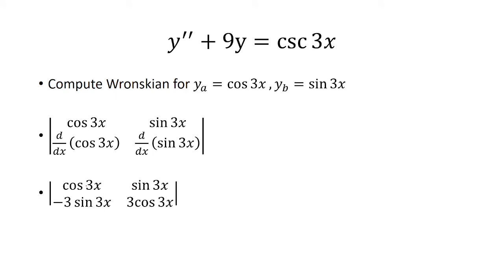So the derivative of cosine 3x is negative 3 sine 3x, and the derivative of sine 3x is 3 cosine 3x. So now we take the determinant, which we have is 3 cosine² 3x, plus 3 sine² 3x.